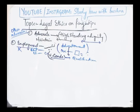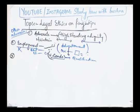Ek advocate simply apne visiting cards publish karwa sakta hai, lekin uspar bhi shart rakhi gayi hai ke visiting cards ke upar sirf aur sirf professional aur academic data ho — aapki qualifications mention ho. Kisi bhi tarha ki koi personal advertisement aap nahi kar sakte, aapko totally prohibit kiya gaya hai under Rule 135.